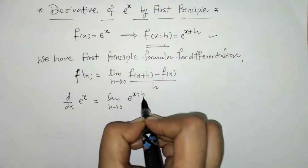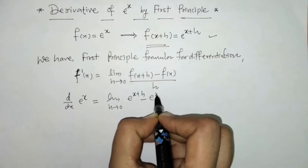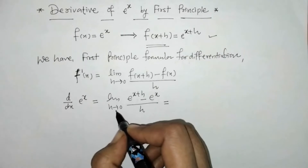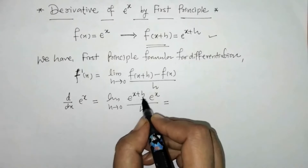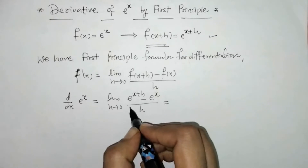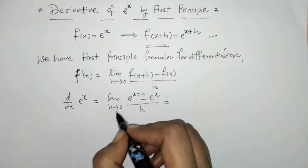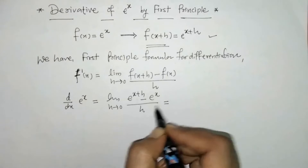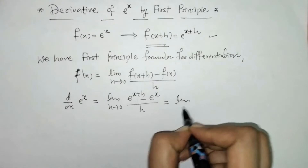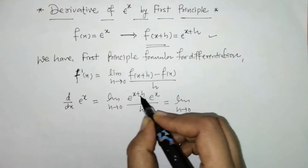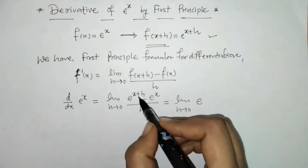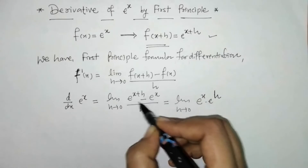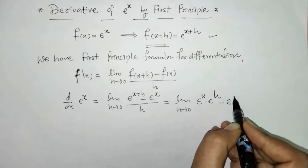So we get e raised to (x + h) minus e raised to x, all upon h. Now when we put h = 0, we can check that the numerator and denominator both get 0. So we adjust this — we can write e raised to (x + h) as e raised to x times e raised to h, by the rule of indices.